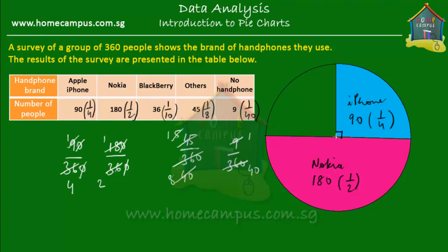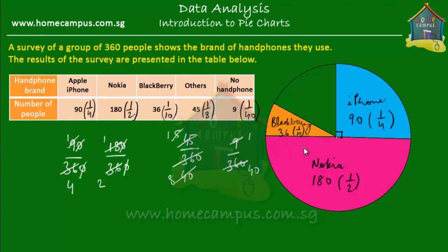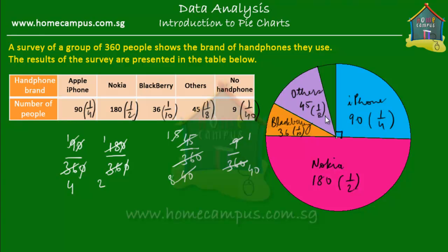For BlackBerry users, one-tenth of all users used BlackBerry. If you cut the whole pie into 10 slices, one of those slices would be the size of the BlackBerry segment. Note that a pie chart is always drawn to scale — for this lesson I'm approximating, but they are always to scale. This slice represents the BlackBerry users: 36 in number, or one-tenth of the whole pie. Next, other brand users represent one-eighth of the whole pie — 45 in number.